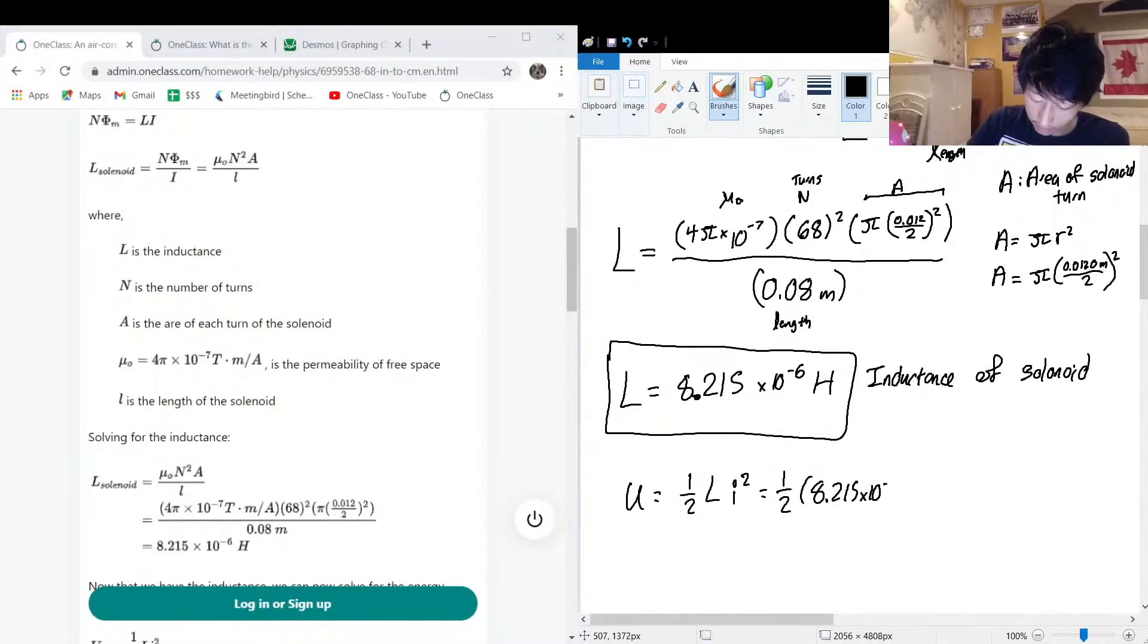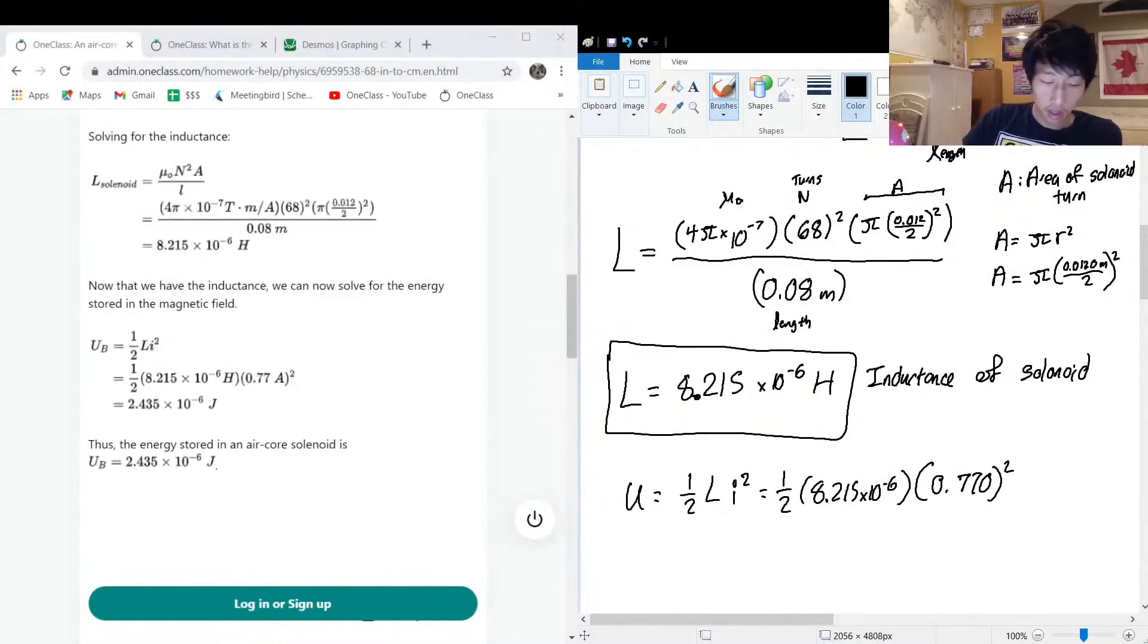8.215 times 10 to the negative six, multiplied by the current was 0.770 squared. And let's calculate it. So we take the inductance, multiply it by 0.77 squared, and multiply it by 0.5, which is the same as divide by two. And the answer that I got was hopefully the same as the one they had here. So U is equal to 2.435 times 10 to the power negative six joules.